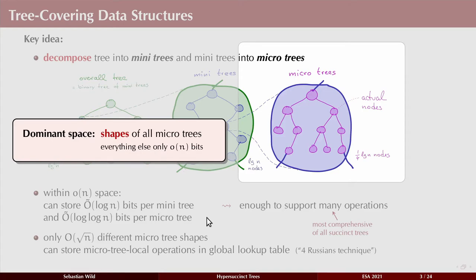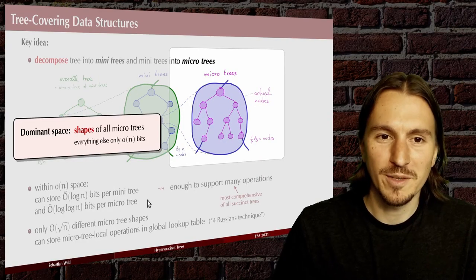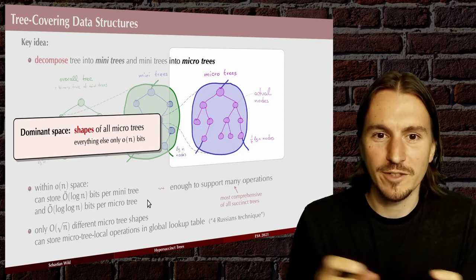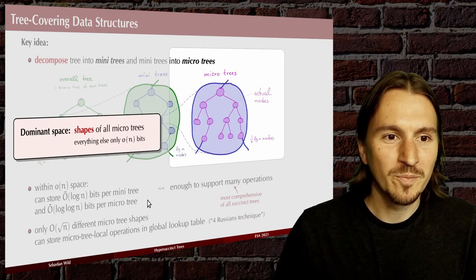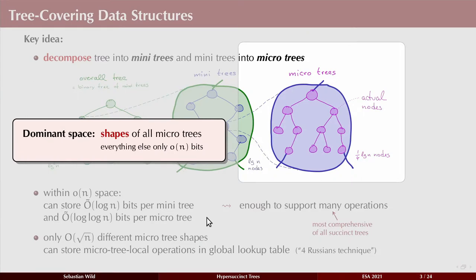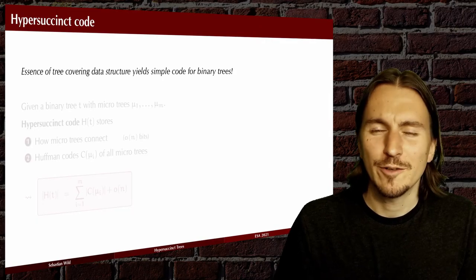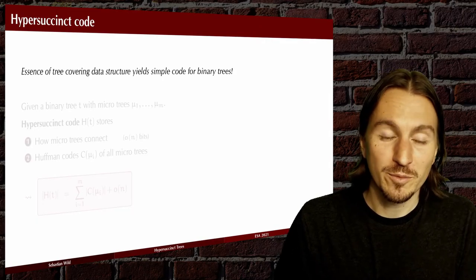The interesting observation here is that the dominant space from storing all these different pieces comes from remembering the shapes of all the micro trees. How does each little micro tree look like? I have to usually just write that down somehow. And that gives the two n bits. Everything else is a lower order term.